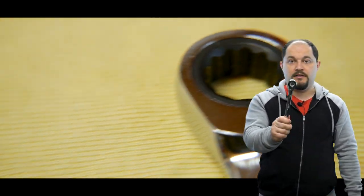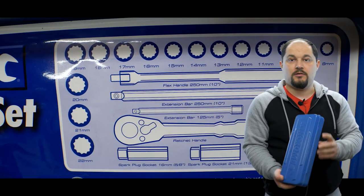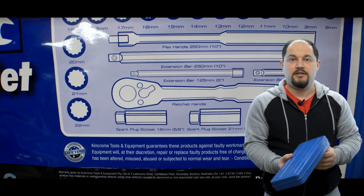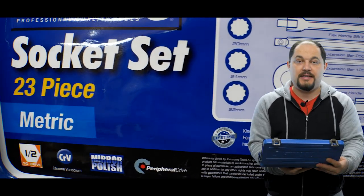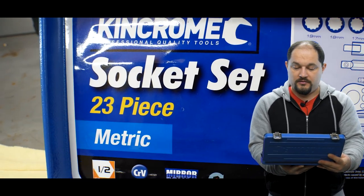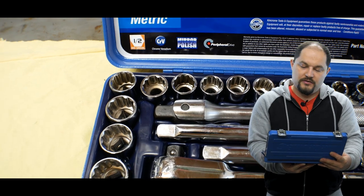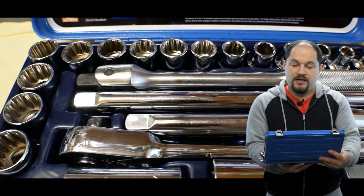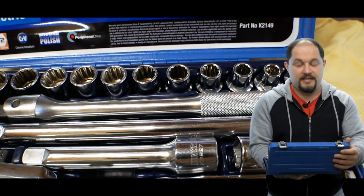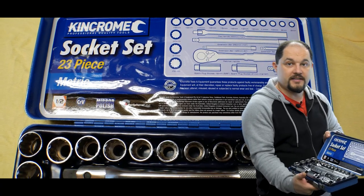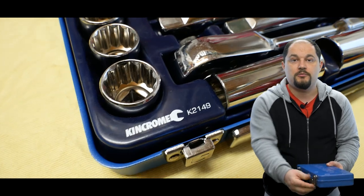The next on my list is a good quality socket set. I bought this King Chrome socket set a few years ago, it is really good quality, heavy. 23 piece metric socket set. It's got the ratchet handle, spark plug socket 16 and 21 mil, universal joint, extension bars 75, 125 and 250. It's got a breaker bar which is 250 mil long and sockets from 8 to 22 millimeters.